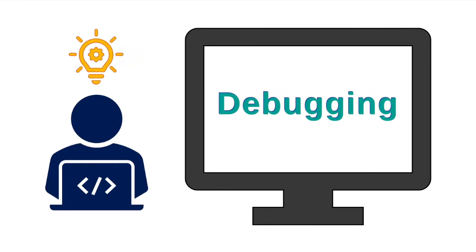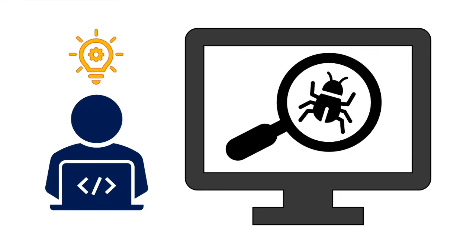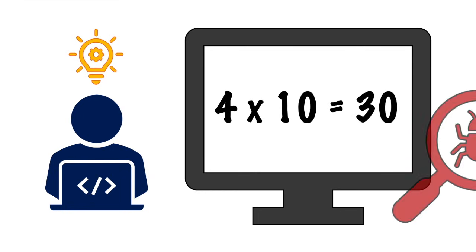Debugging, which means finding and fixing the mistakes in your code, is something that every programmer does. Just like when we make mistakes in writing or math, we have to find and fix the errors.